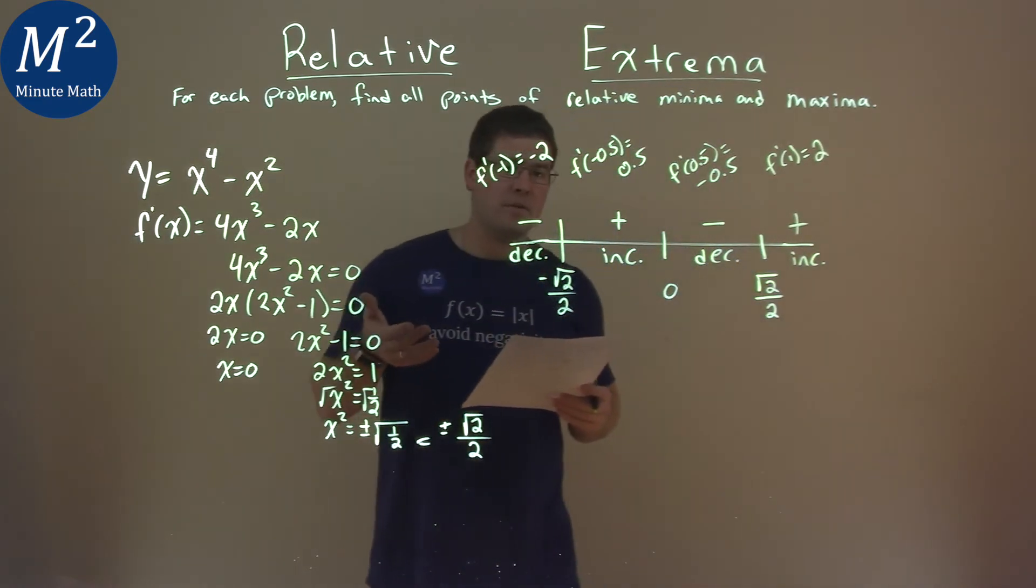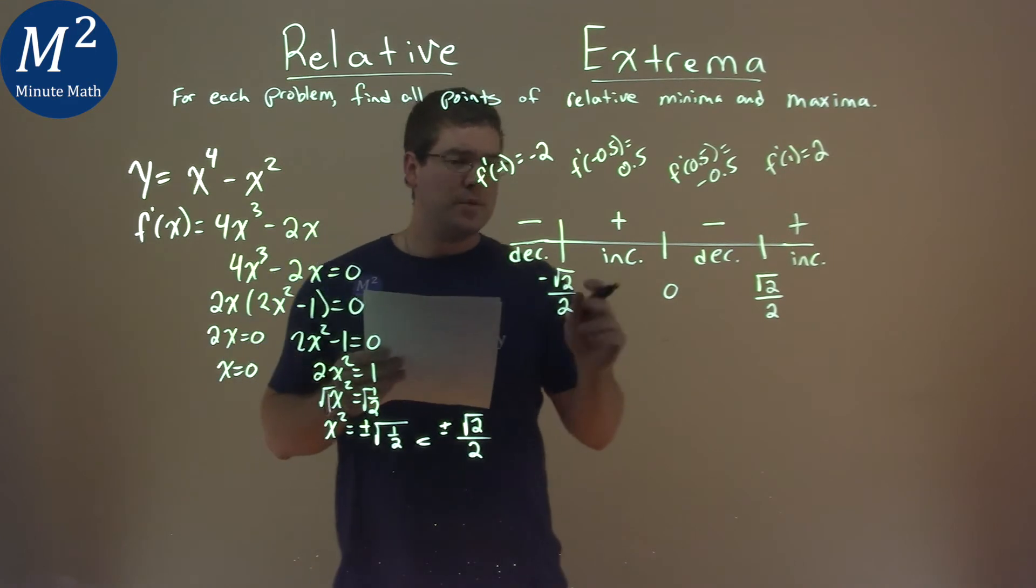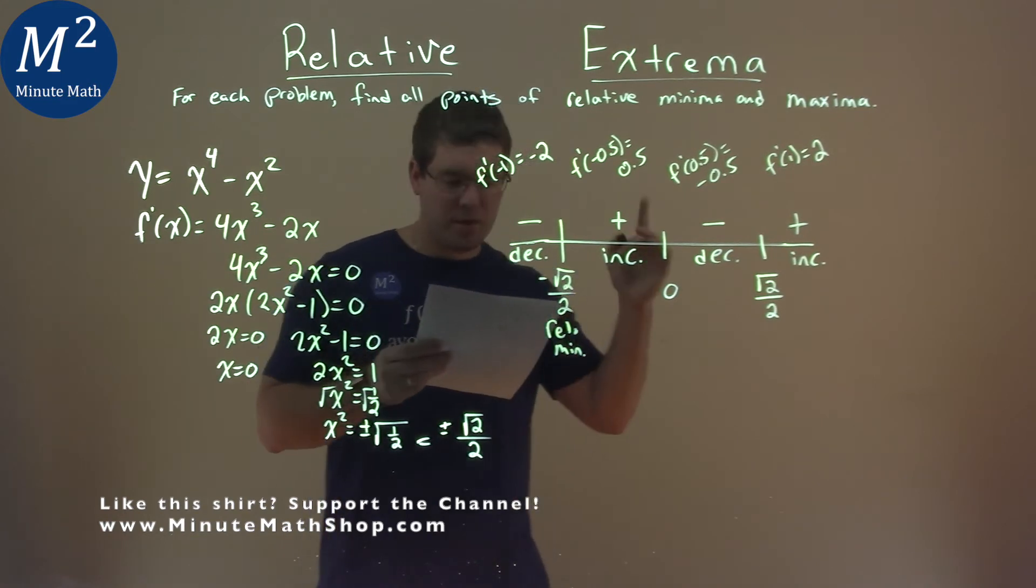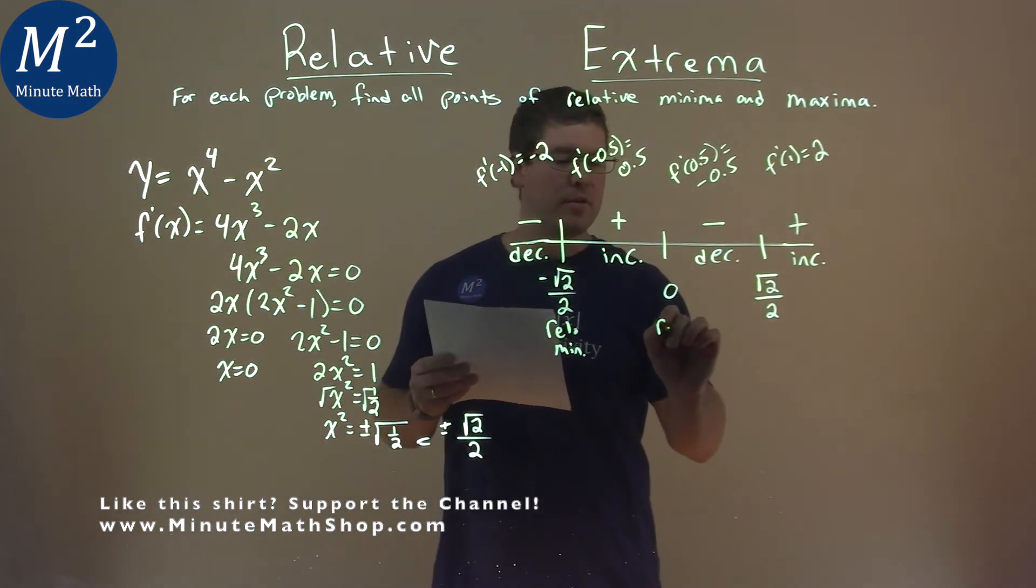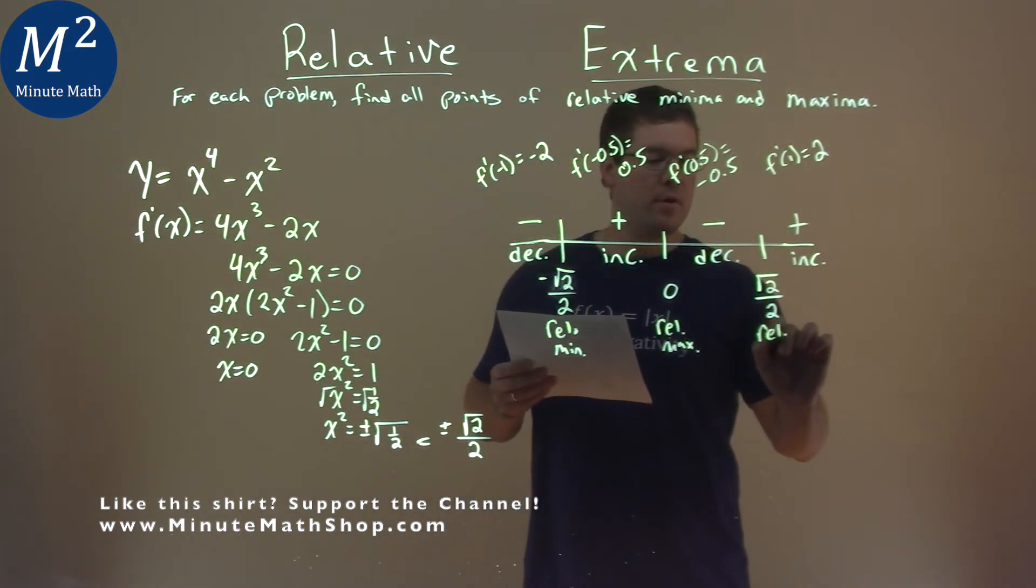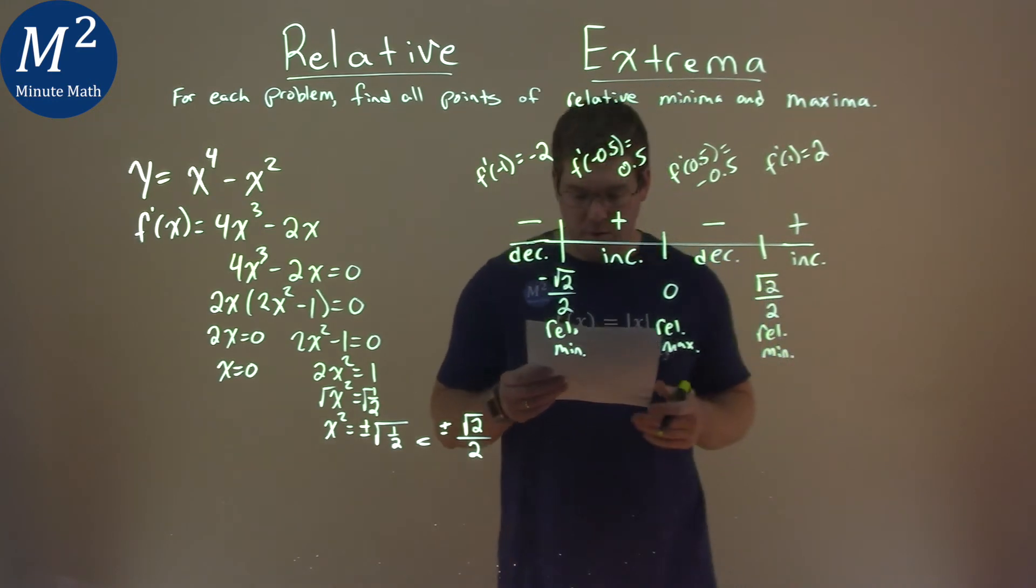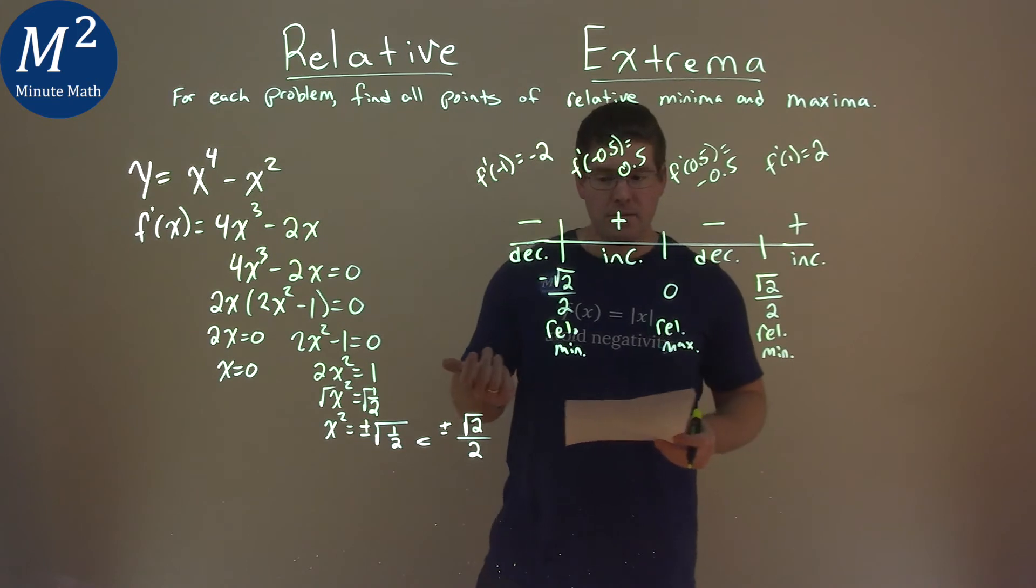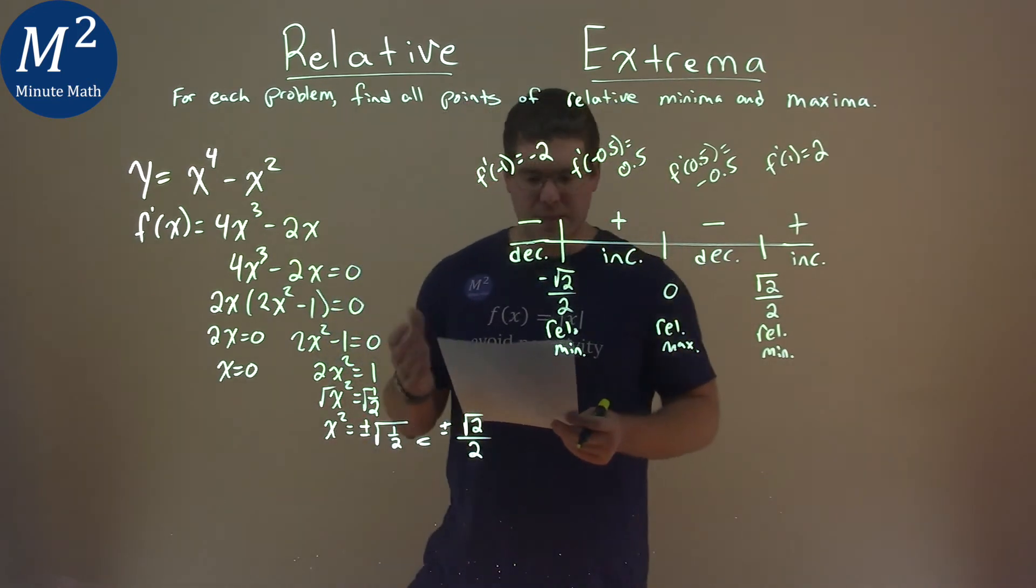So what does this tell us? Well, we're going from decreasing to increasing, we have a relative minimum going on there. If we're going from increasing to decreasing, we have a relative maximum. And if we're going from decreasing to increasing, we have a relative minimum going on there. So we have our values where we're relative mins and maxes. Let's go find the coordinate points there.